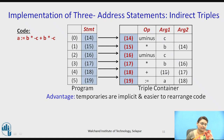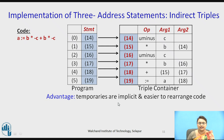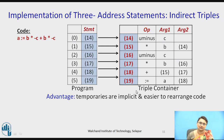Indirect triples combine triples and quadruples. They consist of two parts: a program (a list of pointers) and a triple container with indirect addressing. The addresses are stored in the program, so changing the sequence only requires updating the program list. As a result, temporaries are implicit and the code is easy to rearrange — combining the advantages of both triples and quadruples.